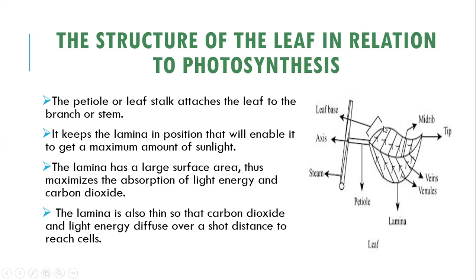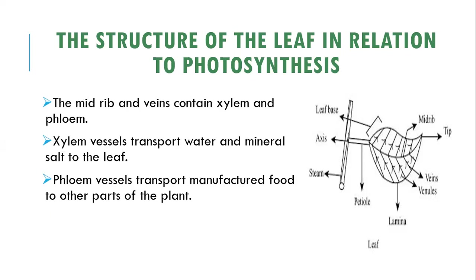The lamina should be well-positioned and exposed to sunlight. It has a large surface area, which maximizes the absorption of light energy and carbon dioxide. The lamina is also thin, so that carbon dioxide and light energy can diffuse over a shorter distance to reach the cells for the process of photosynthesis.